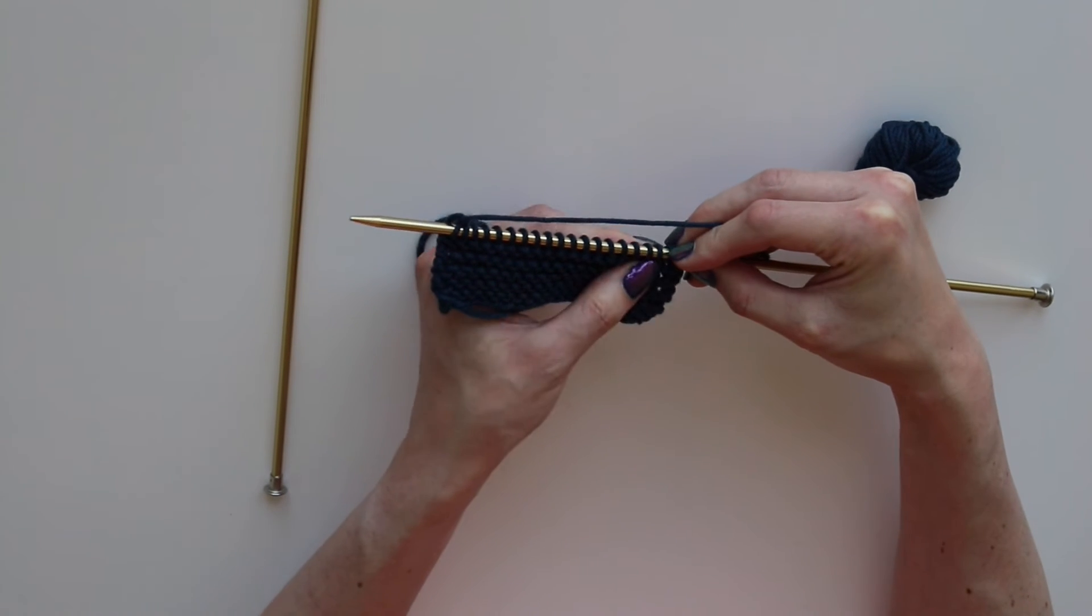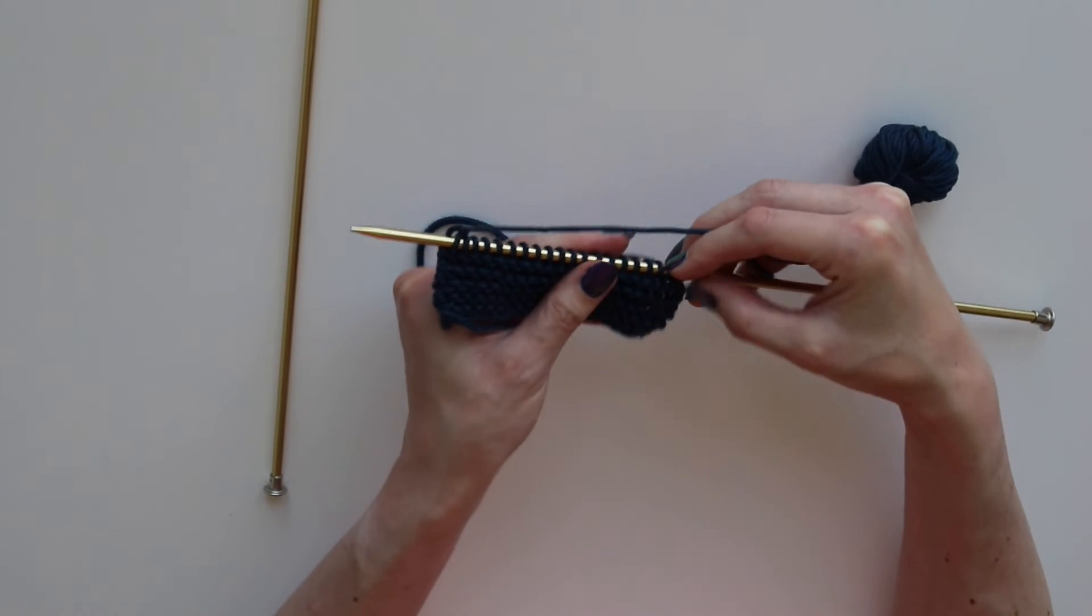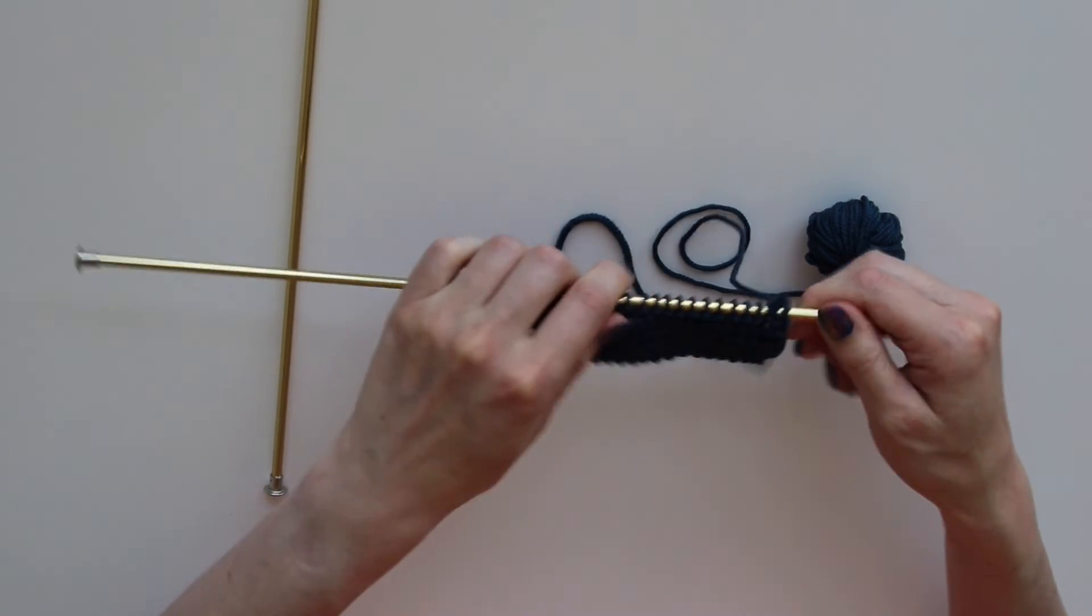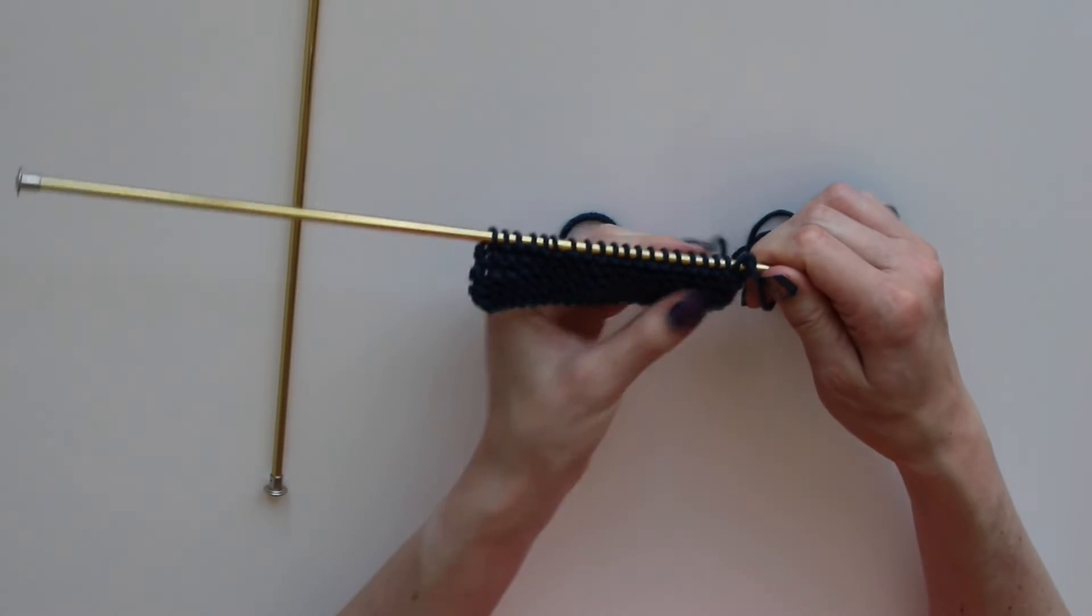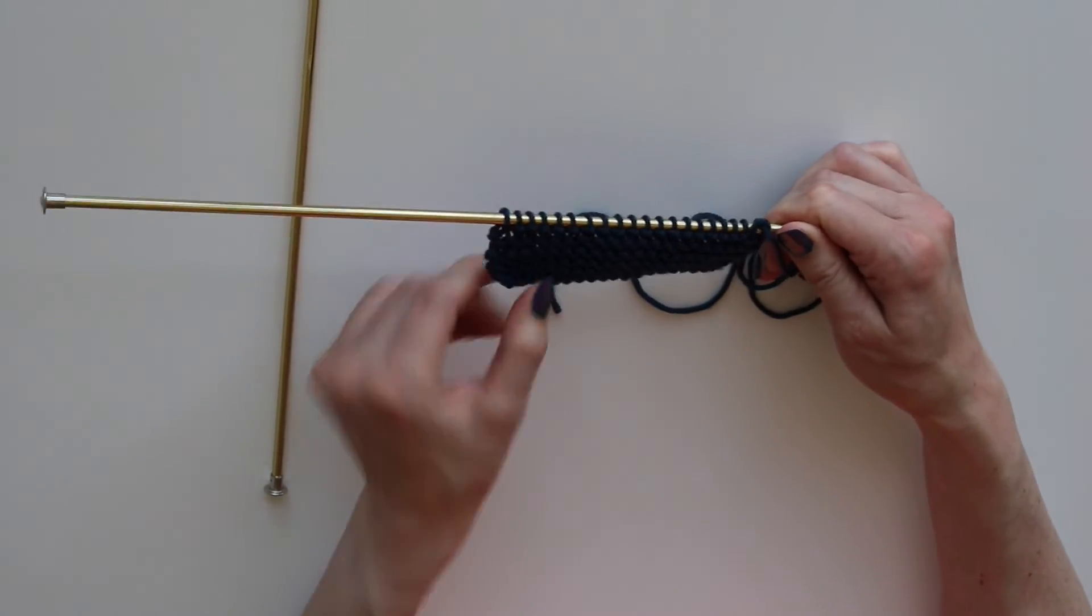When I turn the fabric around to knit the next row, you can see that I will be knitting into the bumps of the purl stitch again on the other side.